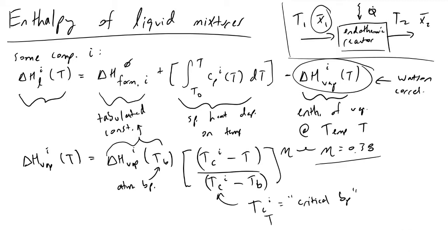Just to spell it out, Tci is a function of pressure and so with these values we can then determine what the enthalpy of vaporization of component i is at any given temperature and then with this term we can fully define what our enthalpy of component i is in the liquid phase of our mixture.